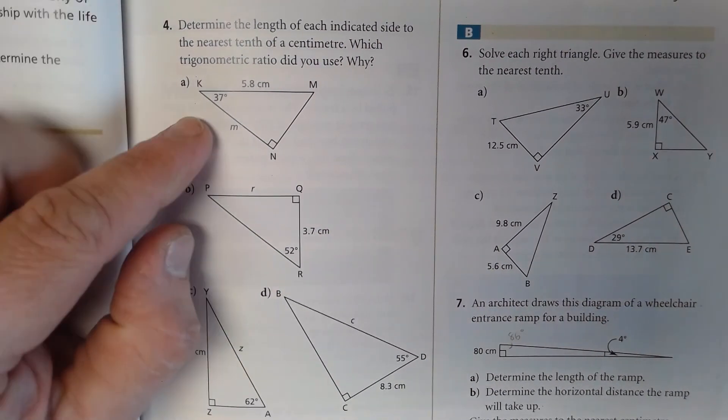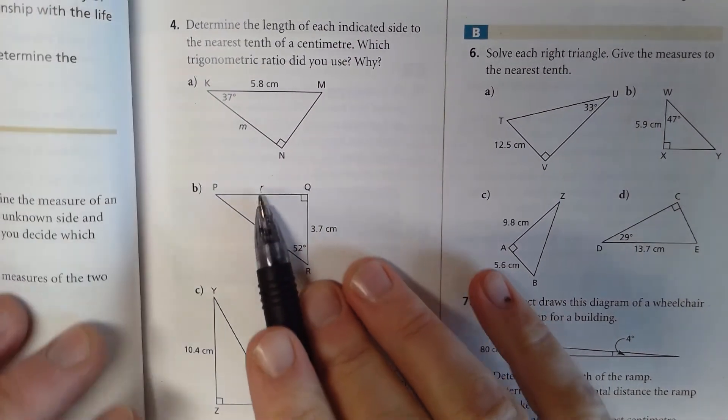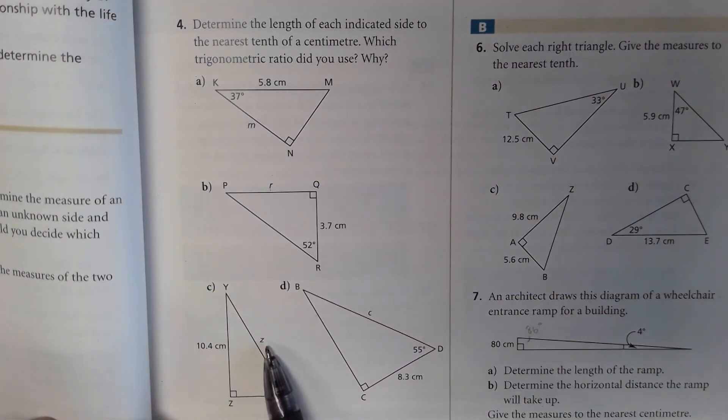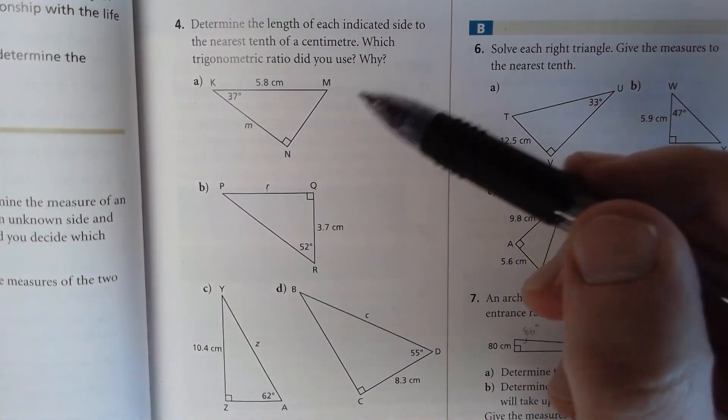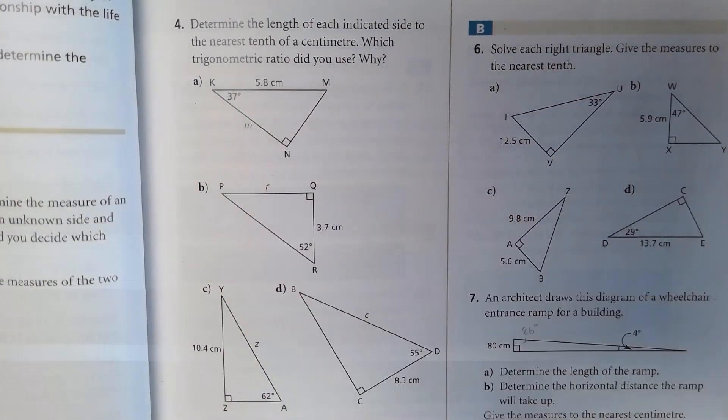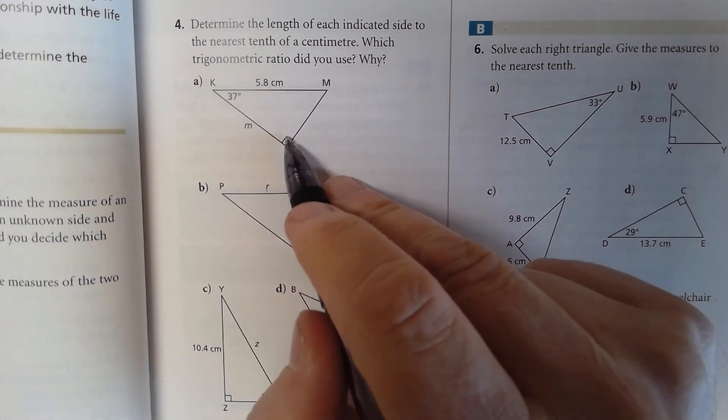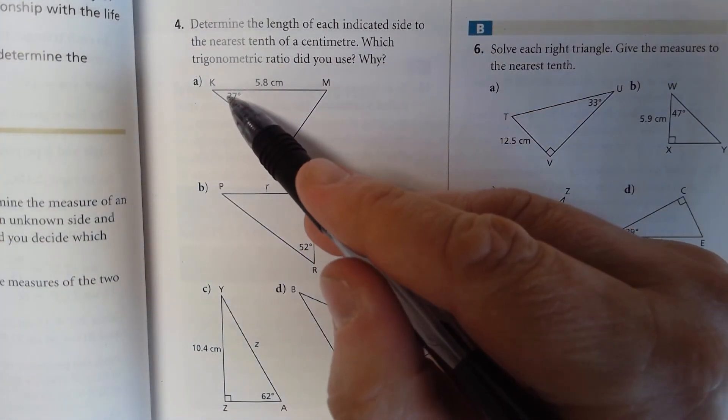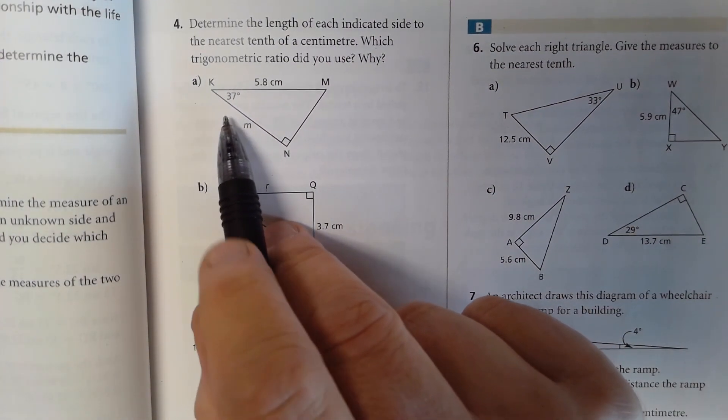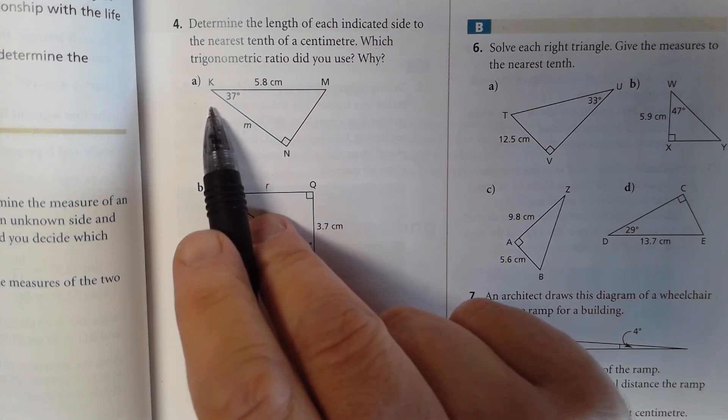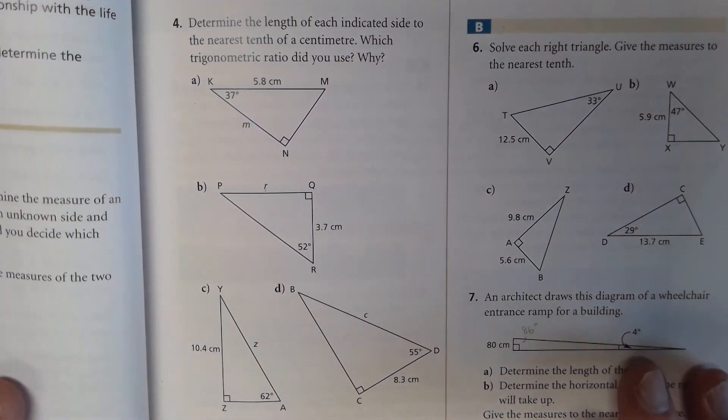You're finding the unknown length of the side that they're indicating. So here it's side M, over here it's side R, here it's side Z, and here it's side C. Let's have a look at this one. You have a known angle here of 37 degrees. This is your hypotenuse, the long side opposite the right angle. And this side is not opposite, it's right beside your known angle. You're going to use cosine. Here you would go cosine 37, M over 5.8, and it would multiply.